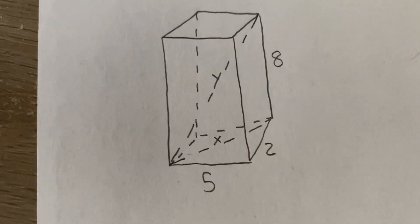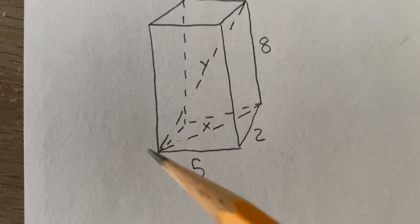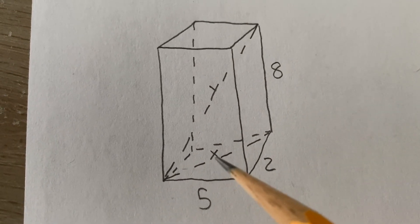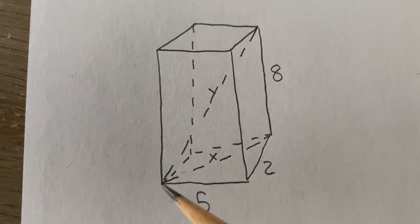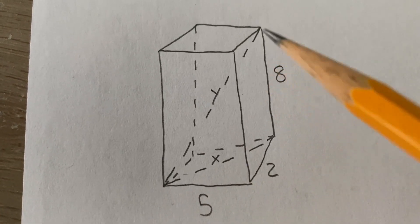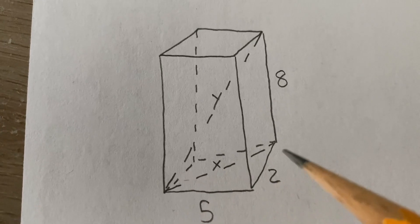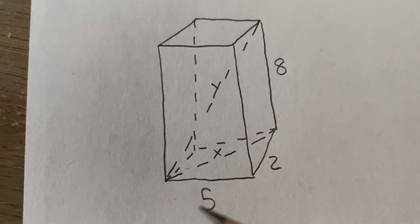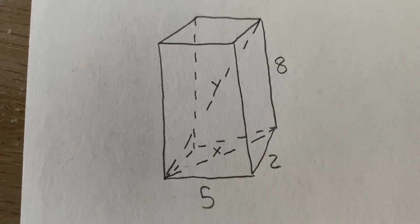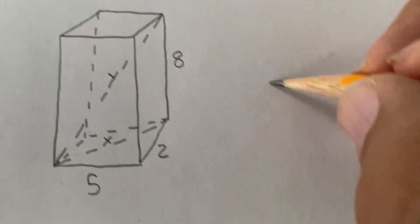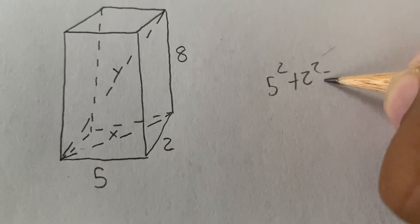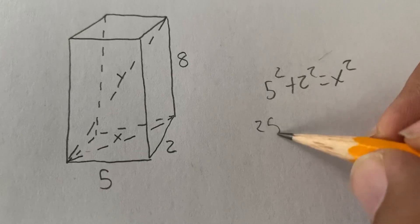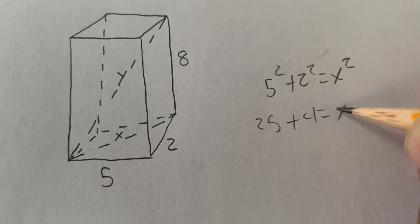Now, this one here. So, we're going to do the right triangle here. So, Pythagorean's Theorem. And we're going to figure out what x is. Then, we're going to use x with this new right triangle so that we can figure out what y is. So, we're going to use every number, but we're going to use these numbers first. So, 5 squared plus 2 squared is going to equal that x squared. Causing this to be 25 plus 4 equals x squared.